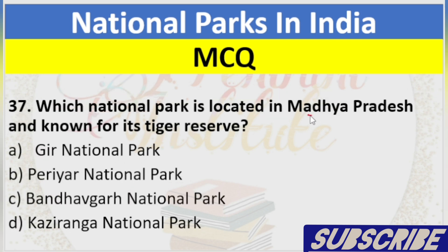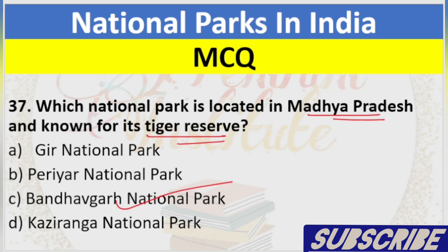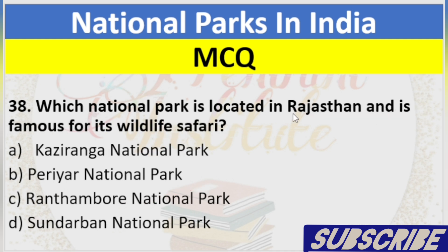Question 37: Which National Park is located in Madhya Pradesh and known for its tiger reserve? A. Gir National Park, B. Periyar National Park, C. Bandhavgarh National Park, D. Kaziranga National Park. Answer: C. Bandhavgarh National Park.